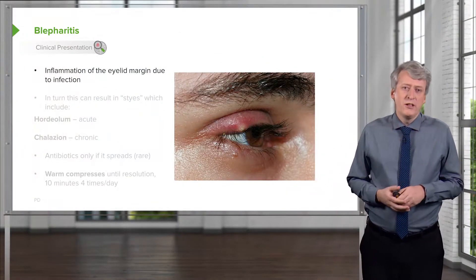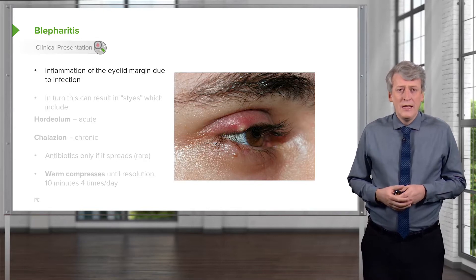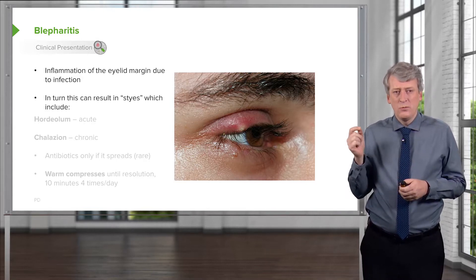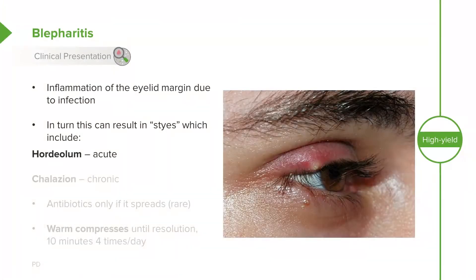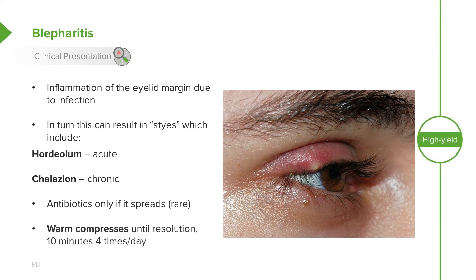Blepharitis is an inflammation of the eyelid margin and it's due to infection. This, in turn, can result in styes which include the hordeolum, which is acute, and the chalazion, which is chronic. Antibiotics are really only needed in these sorts of things if it spreads and becomes a preseptal cellulitis, which is quite rare. In general, we can treat these with warm compresses until resolution.